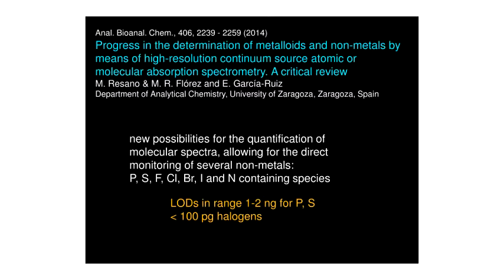Another aspect of high-resolution continuum source instrumentation is the ability to look at elements not amenable to classic atomic absorption, such as phosphorus, sulfur, the halogens, and nitrogen. By looking at molecular forms, you have an instrument capable of isolating the rotational-vibrational structure of molecules such as phosphorus oxide, sulfur oxide, magnesium chloride, or magnesium bromide — by adding a metal to the sample to form a molecule, you can look at the absorption by that molecule.